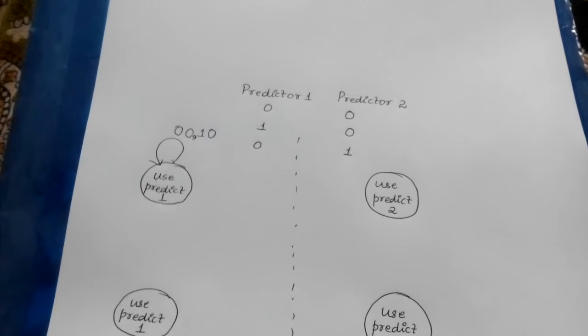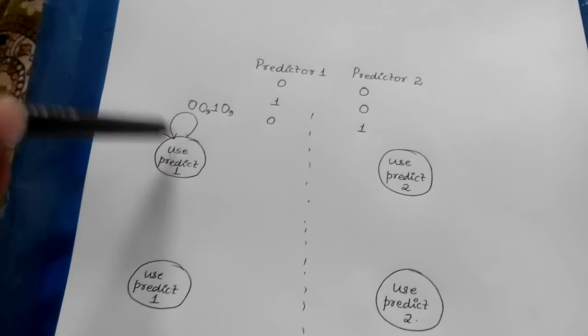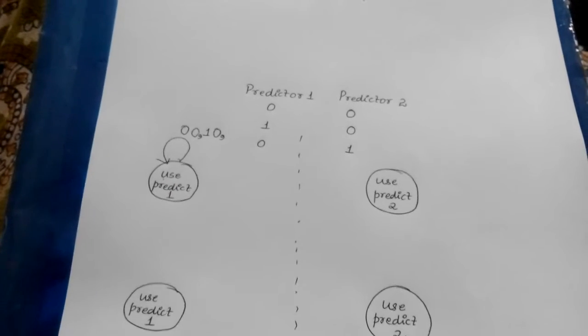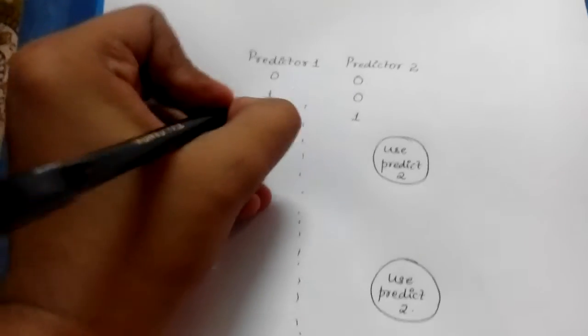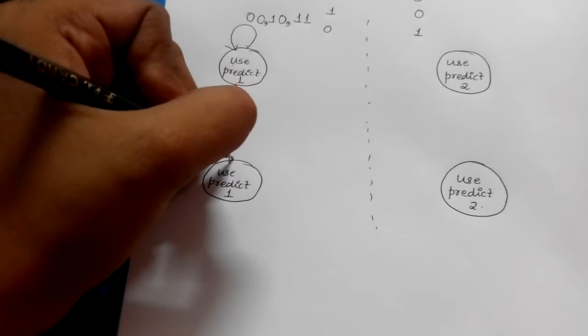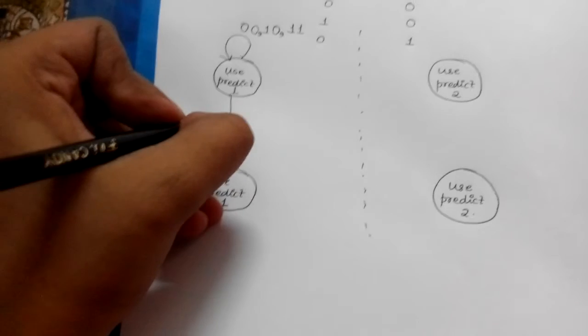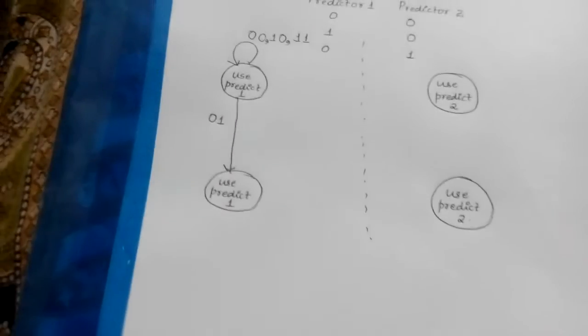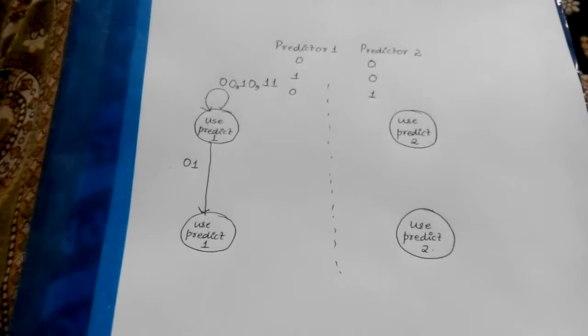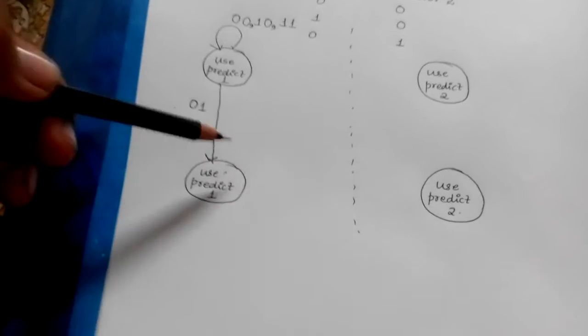Since predictor 1 is correct, the predictor bit will remain in the same state. When both predictor 1 and predictor 2 bits are true (1,1), the predictor also remains in the same state. Only when predictor bit 2 is correct and predictor 1 is wrong — the combination 0,1 — will there be a transition to the next state. Conversely, when predictor bit 1 is correct and predictor 2 is wrong (1,0), there will be a transition back.